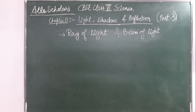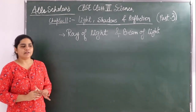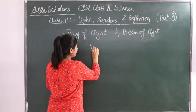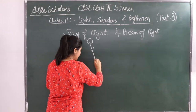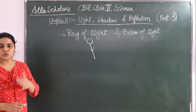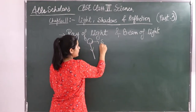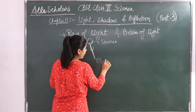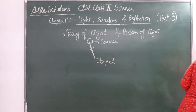A ray of light is a straight thin beam of light from a source to an object. Suppose this is a source — a straight thin beam of light that travels from the source and falls on the object is called a ray of light.